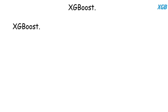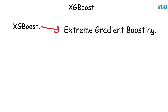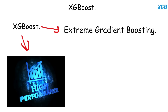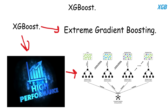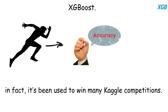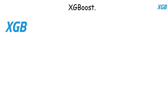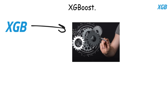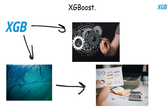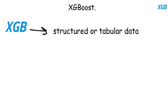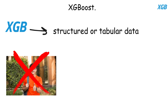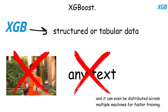XGBoost stands for Extreme Gradient Boosting. It's a high-performance framework for gradient-boosted decision trees, known for speed and accuracy — in fact, it's been used to win many Kaggle competitions. XGBoost uses a clever optimization system to minimize overfitting and runs efficiently on large datasets. It's mainly used for structured or tabular data, not images or text, and it can even be distributed across multiple machines for faster training.